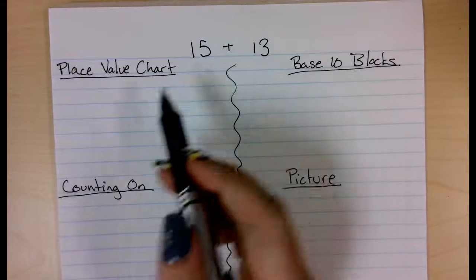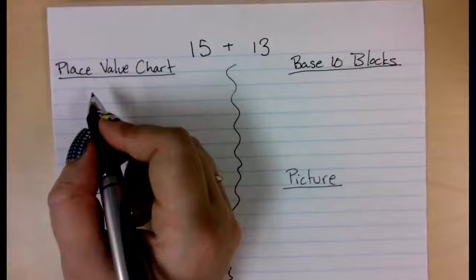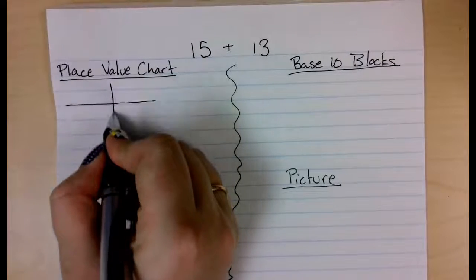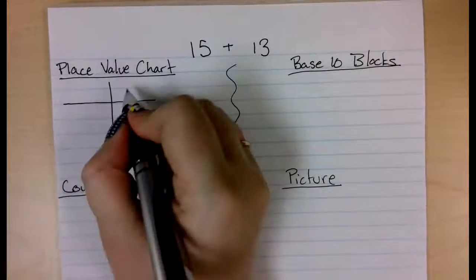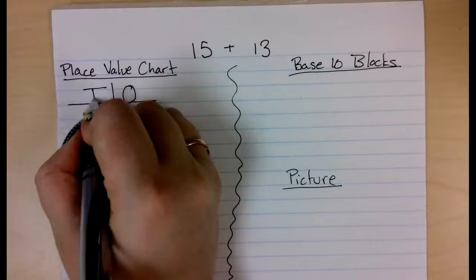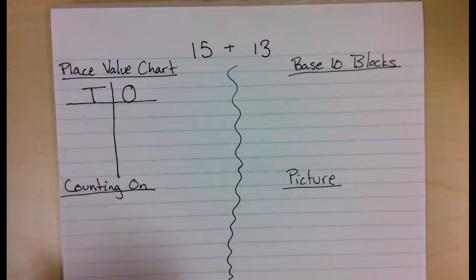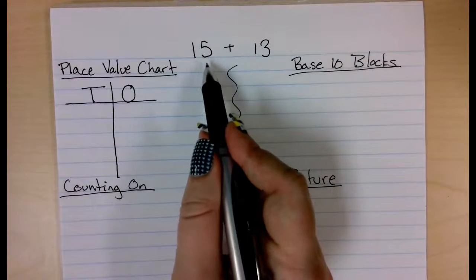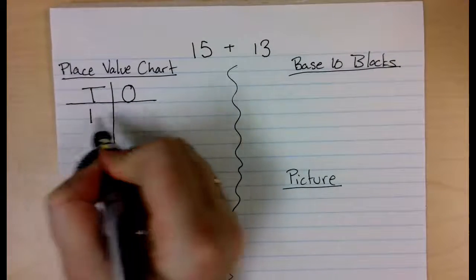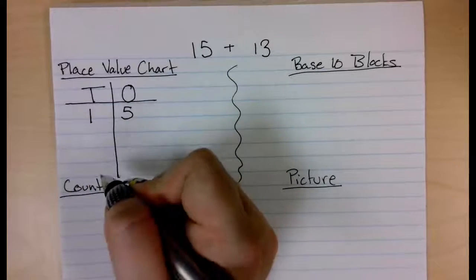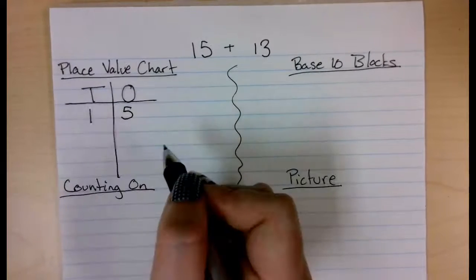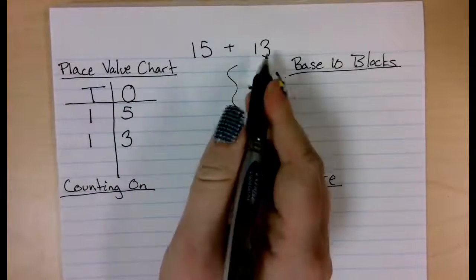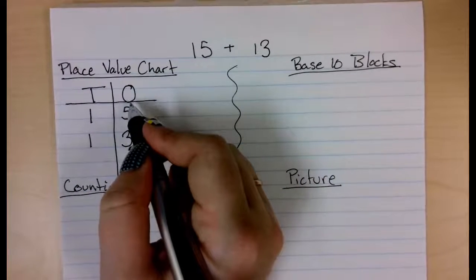The first one is a place value chart. So I am going to draw a quick place value chart with my ones section and my tens section. And I am going to put my numbers in here, so I have 15, my 5 is in the ones spot, my 10 is in the tens spot, and 13, my 3 is in the ones spot, my 10 is in the tens spot.